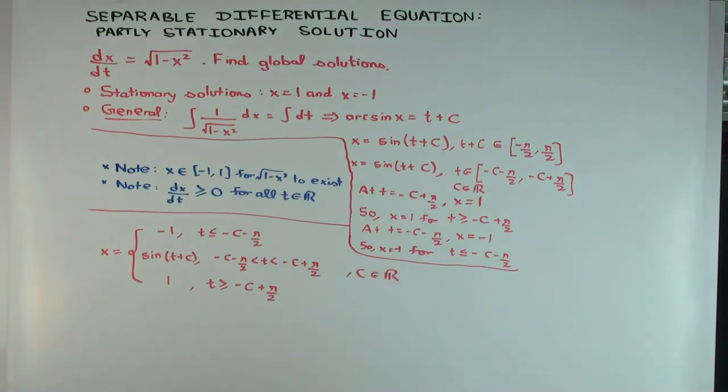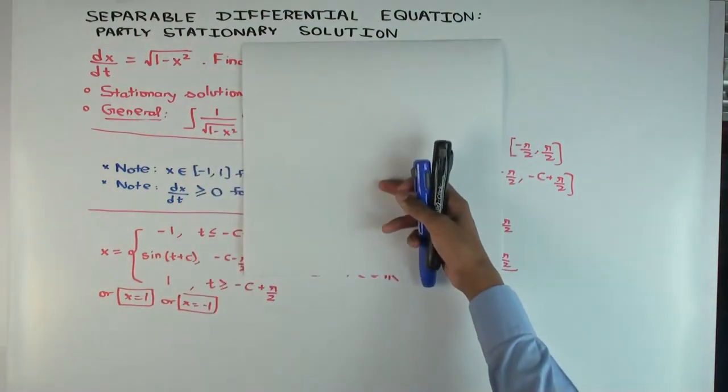So this is the general solution. And the value of c is arbitrary. So for every value of c, you'll get a solution. Let's just make a quick picture, see pictures to see what the solution is. And of course, there are just two stationary solutions. Okay, x = 1, or x = -1. So the general solution plus two stationary solutions.